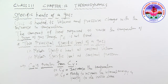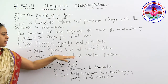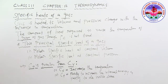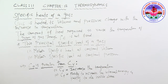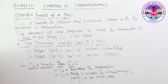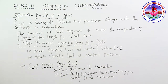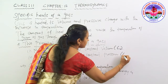There are two principal specific heats of a gas. The first is molar specific heat at constant volume (Cv) — the amount of heat required to raise the temperature of one mole of gas through one degree Celsius at constant volume. The second is molar specific heat at constant pressure (Cp) — the amount of heat required to raise the temperature of one mole of gas through one degree Celsius at constant pressure.